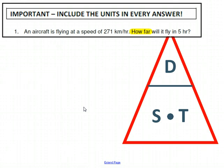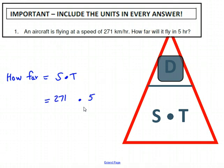If you did not get that answer, here's the explanation. Using the triangle, I'm asked how far, so I'm asked for distance. I'm going to calculate my answer by doing speed times time, and that's 271 for speed, 5 for time. I put the units in there, I cancel out these hours, and I'm going to be left with kilometers, which is a perfectly sensible unit for how far. 271 times 5 is 1,355.